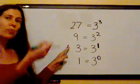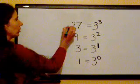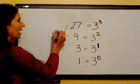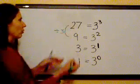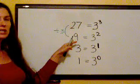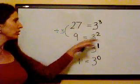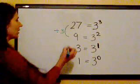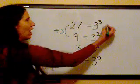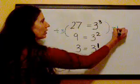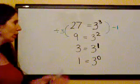how can I go backwards? So if I divide by 3, 27 divided by 3 gives me 9, which is 3 squared. And you can see I went down by an exponent, I went down minus 1, I subtracted 1.